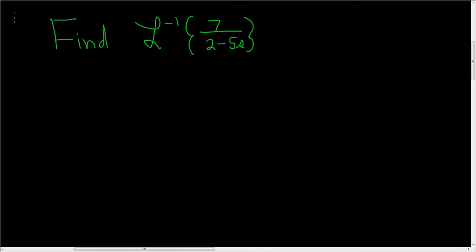Find the inverse Laplace transform of 7 over 2 minus 5s. Solution: The formula that we want to make this match is the following. The inverse Laplace of 1 over s minus a. This is equal to e to the at.